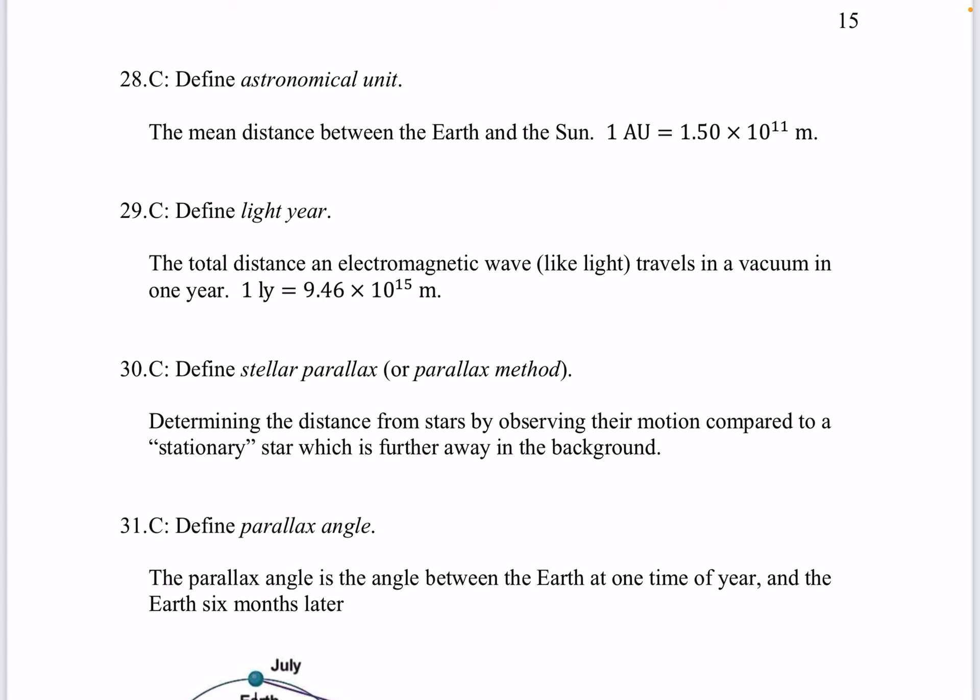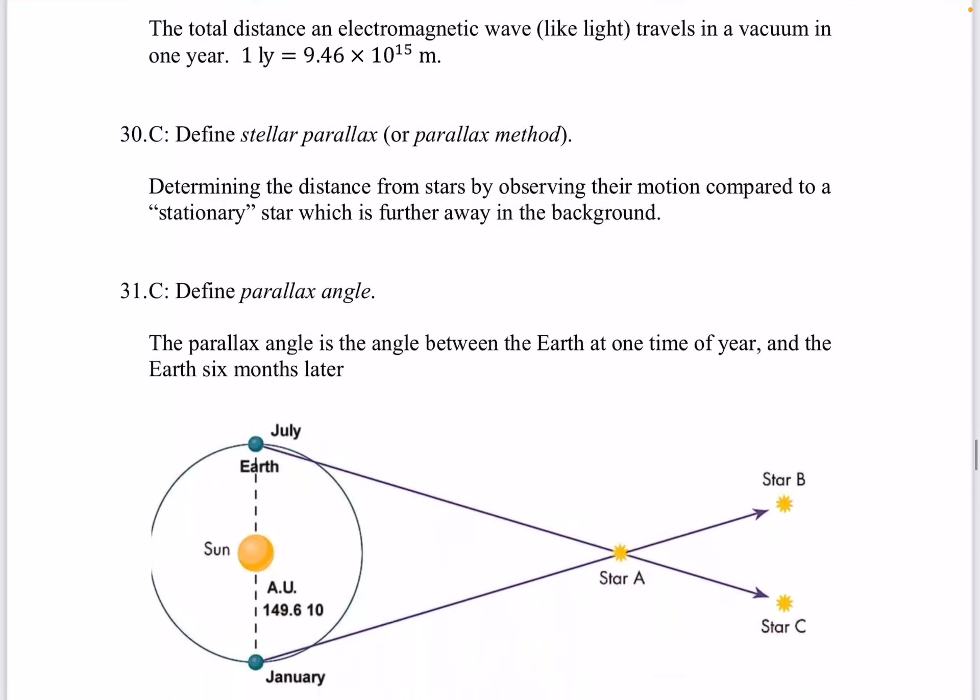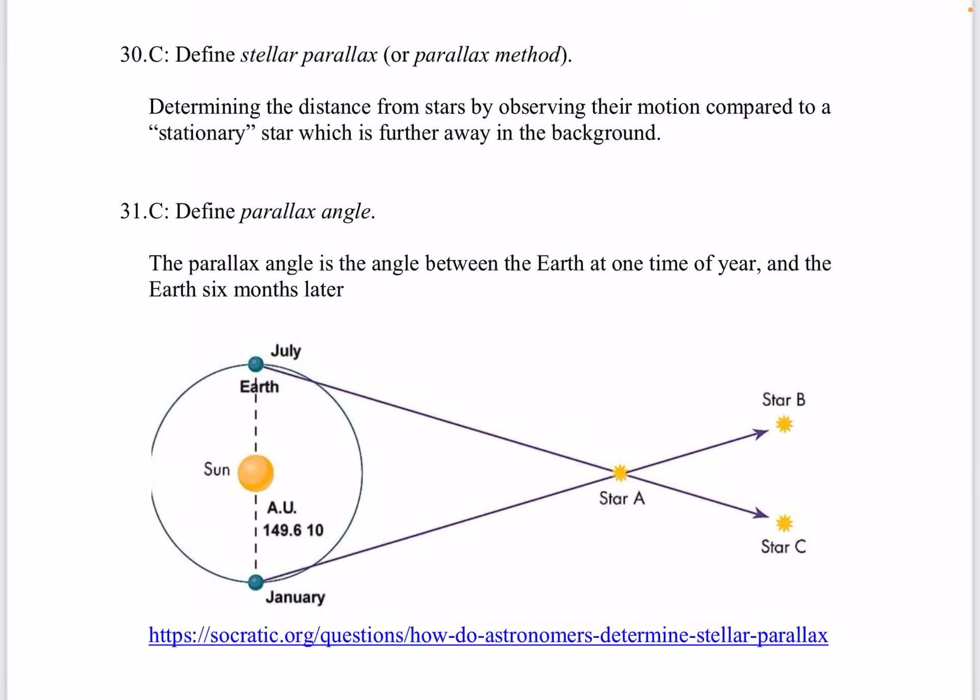Question 29. Define light year. This is the total distance an electromagnetic wave like light travels in a vacuum in one year. Question 30. Define stellar parallax. This is determining the distance from stars by observing their motion compared to a stationary star which is further away in the background.